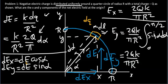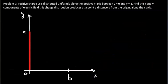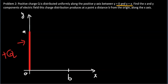So Ex = 2kQ/(pi·r²) is the x-component and Ey = 2kQ/(pi·r²) is the y-component of the electric field at the origin — that solves the first problem. Now for the second problem: a positive charge Q is distributed uniformly along the positive y-axis between y = 0 and y = a. We need to find the x and y components of the electric field at a point distance b from the origin along the x-axis.